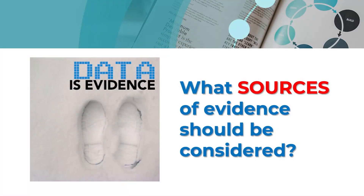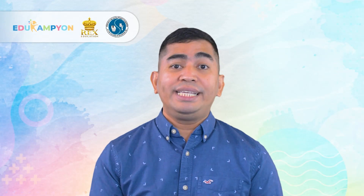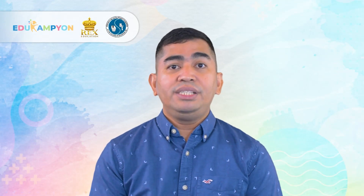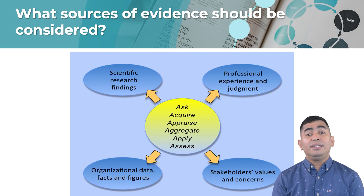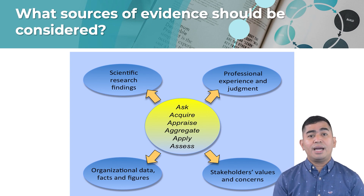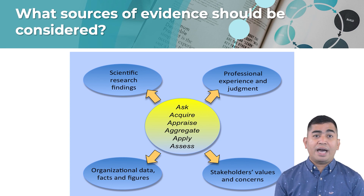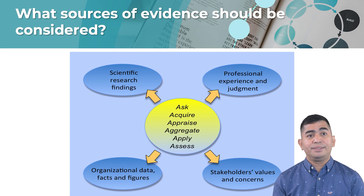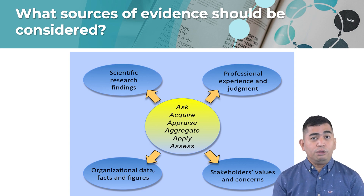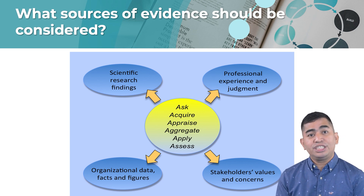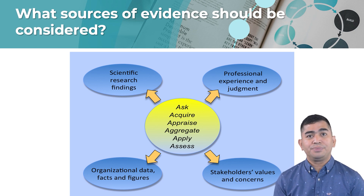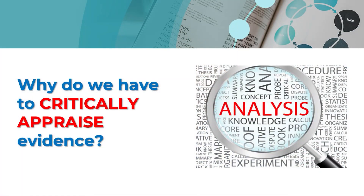What sources of evidence should be considered as you take all six steps in EBP? In summary, evidence should be considered as: number one, scientific research findings — it's important to be theoretically grounded in your practice. Second, your professional experience and judgment. Third, your organizational data, facts, and figures — it's very important to look keenly at the things happening in your context. And lastly, to look at the stakeholders' values and concerns. In looking for best available evidence, the question to ask is: why do we have to critically appraise them?